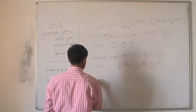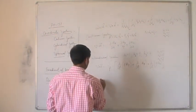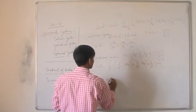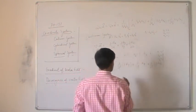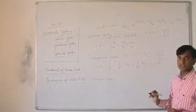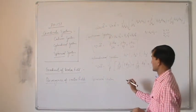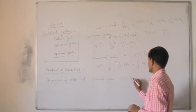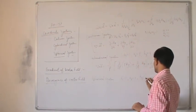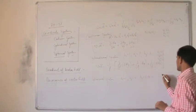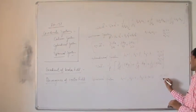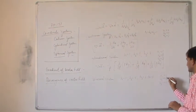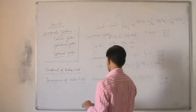In the spherical system, h1=1, h2=R, h3=R sin theta. Del dot A equals (1/(R squared sin theta)) times [del/del R (R squared sin theta A_R) plus del/del theta (R sin theta A_theta) plus del/del phi (R A_phi)].